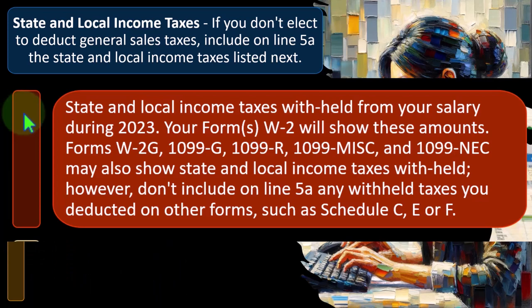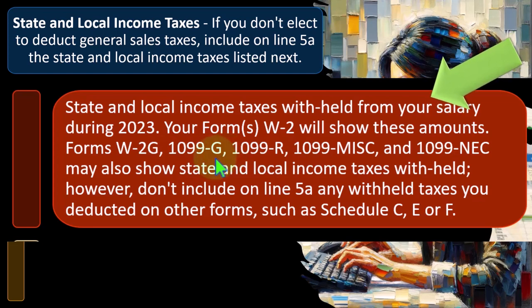Your Form W-2 will show these amounts. Forms W-2G, 1099-G, 1099-R, 1099-Miscellaneous, and 1099-NEC may also show state and local income taxes withheld. These are all income-type forms discussed in the income section. They're less likely to have withholdings than the W-2, except possibly the 1099-R for retired individuals, but they could have the same kind of withholding.